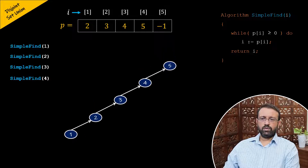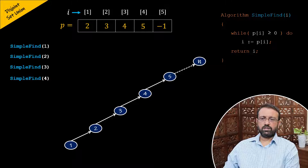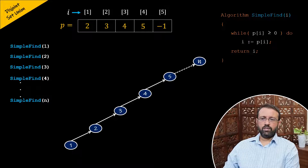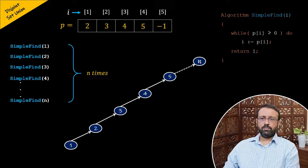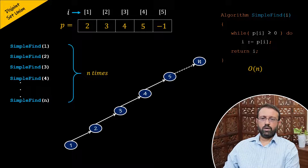Now suppose we have n elements in the disjoint set represented as a tree in this fashion. If we perform the sequence of find operations starting from finding element one to n, we will be calling the simple find algorithm n times. The simple find algorithm has O(n) time complexity, and calling it n times will result in O(n²) time complexity. So the simple find algorithm doesn't perform well in certain cases.